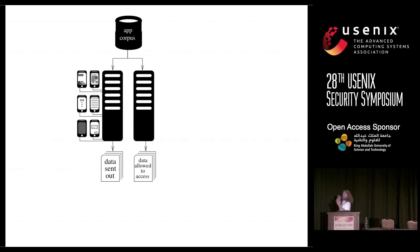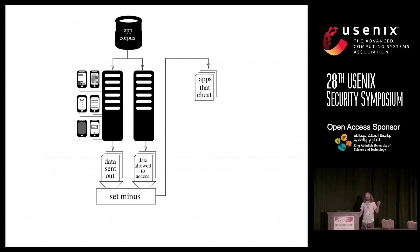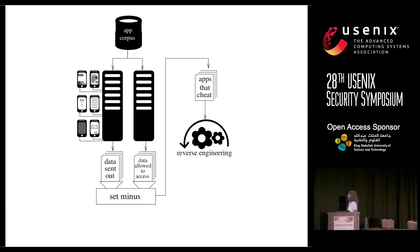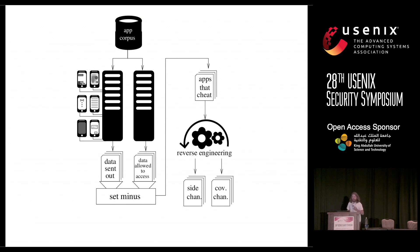In general, we now have two pieces of data: the data that was sent and the data that was allowed to be accessed. We do a set minus and find a bunch of transmissions of data for which the app did not have permission to access in the first place — for example, an app sending the IMEI out somewhere on the internet but without the read phone state permission. The next part was a tedious reverse engineering of all these apps to figure out exactly how these transmissions occurred. The result was a bunch of reports of side and covert channels.